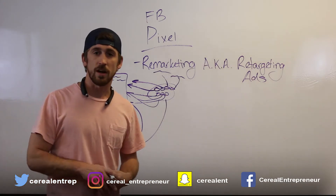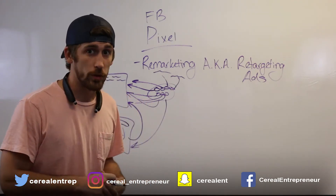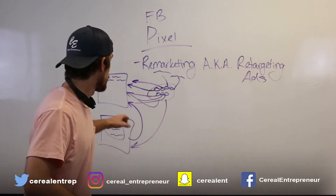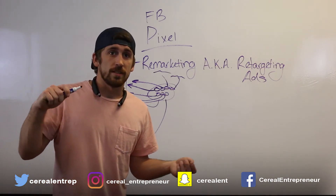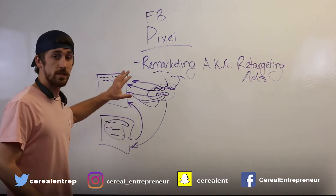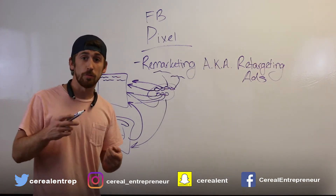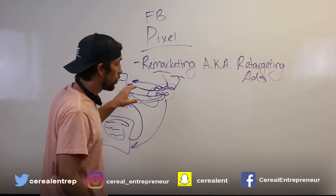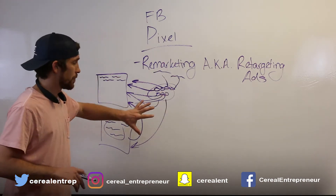Now you can go into Facebook's back end and create a custom audience targeting those five people who visited your website and have a Facebook account. Someone who visits your website is about 70 to 80% more likely to make a purchase than someone who just sees your Facebook page. You can also track which specific pages they visited - your pricing page, services page, blog - and set up different targeting functions to track that behavior.